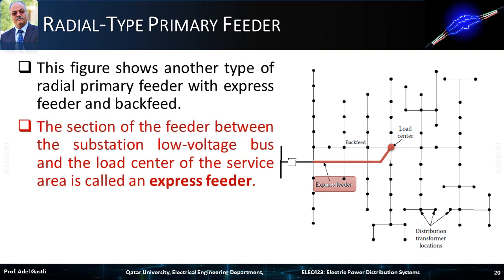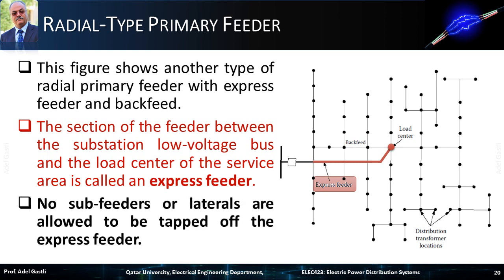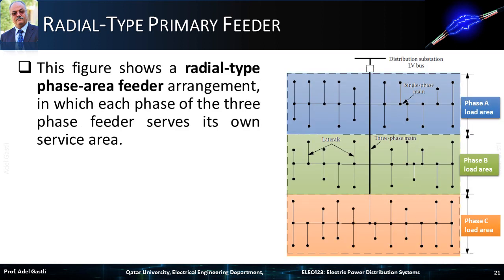The section of the feeder between the substation low voltage bus and the load center of the service area is called an express feeder. No sub feeders or laterals are allowed to be tapped off the express feeder. This figure shows a radial type phase area feeder arrangement, in which each phase of the three-phase feeder serves its own service area. Phase A serves the upper load area shown in blue, Phase B serves the medium load area shown in green, and Phase C serves the bottom load area shown in orange.